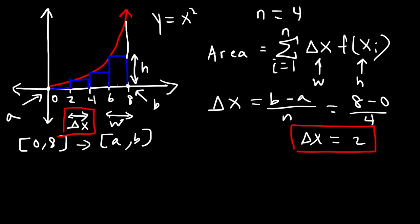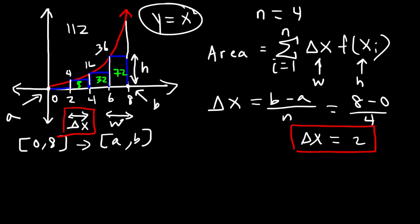To calculate the area of each rectangle: when x is 0, the height is 0 squared = 0; when x is 2, the height is 2 squared = 4; when x is 4, the height is 4 squared = 16; when x is 6, the height is 6 squared = 36. Width times height: 2×4 = 8, 2×16 = 32, 2×36 = 72. Adding them: 8 + 32 = 40, 40 + 72 = 112. So we get an area of 112.